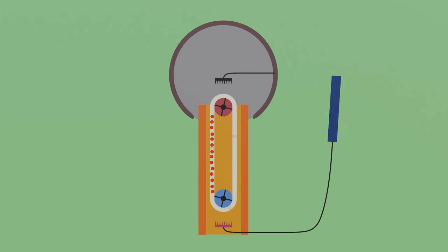Overall, the Van de Graaff generator acts as a pump, transporting electrons from a source to a sink and creating a large potential difference in the process. Each time we see a spark, the dome gets replenished with electrons and the process starts all over again.